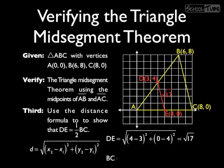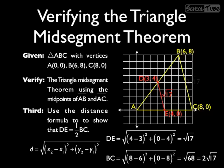And segment BC is absolutely no different, (8 - 6)² + (0 - 8)². That is the square root of 68, but 68 is 4 times 17, so that reduces to 2 times the square root of 17.